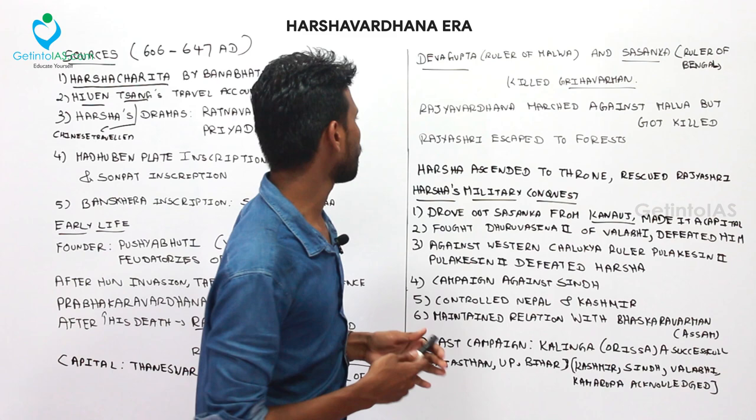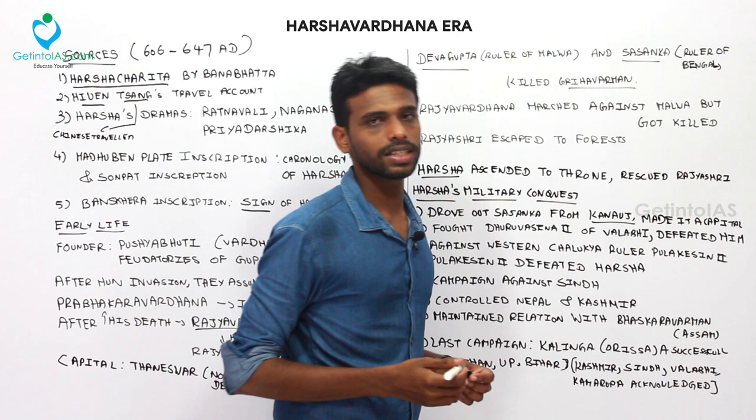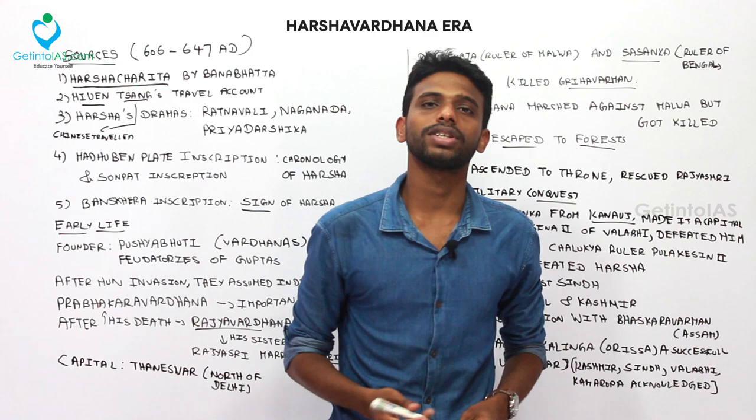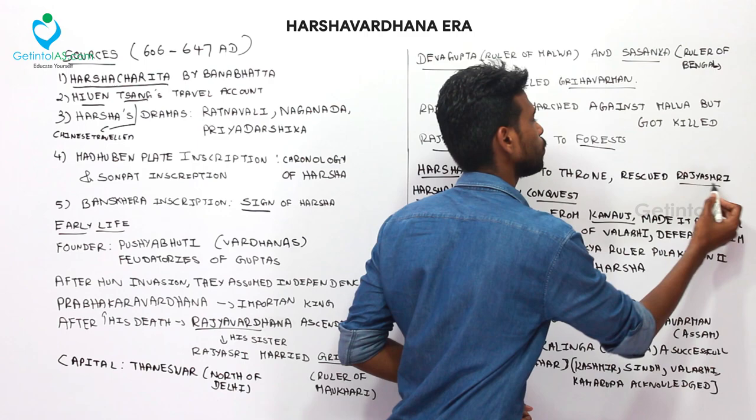After Harsha ascended the throne, his first target was to rescue his sister. Rajyashri had escaped to the forest after the annexation of the kingdom, and while she was trying to immolate herself, Harsha Vardhana arrived and rescued her. This was his first priority upon ascending the throne.